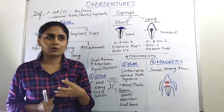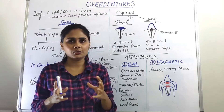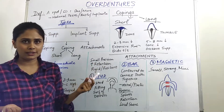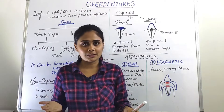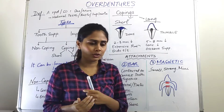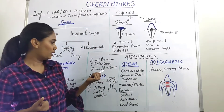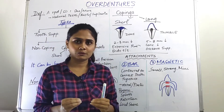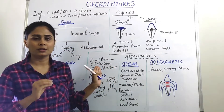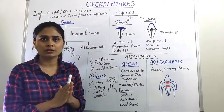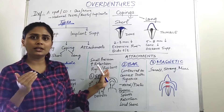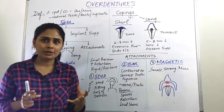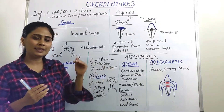Moving on to attachments — they are small precision units which help increase retention. Attachments can be of two types: rigid and resilient. If you want more retention and strength, you go for a rigid type, but the main disadvantage is that more torquing forces will be seen, which we as dentists do not prefer. For resilient type, resilience means adaptability — if our attachments are adaptable, they provide less torquing forces, which is preferable.